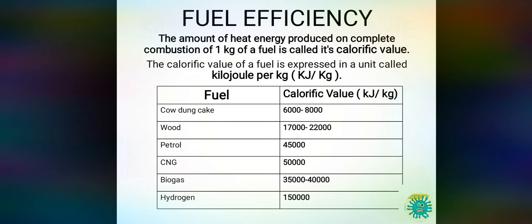For example, take one kg of cow dung cake and one kg of CNG. When you start burning both of them, you will see that CNG will provide more heat energy. CNG's calorific value is higher than that of cow dung cake, as you can see in the chart.